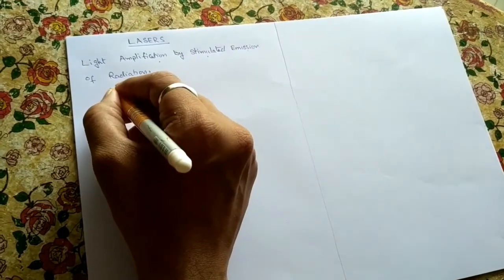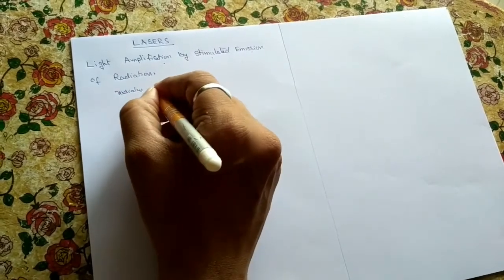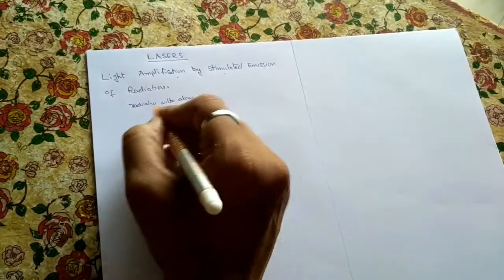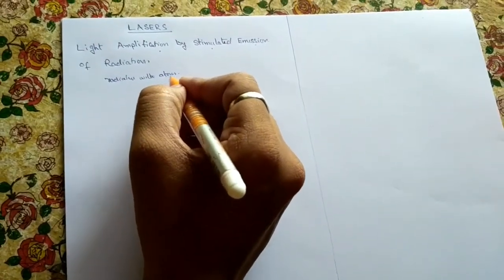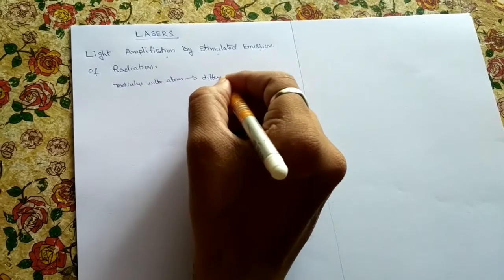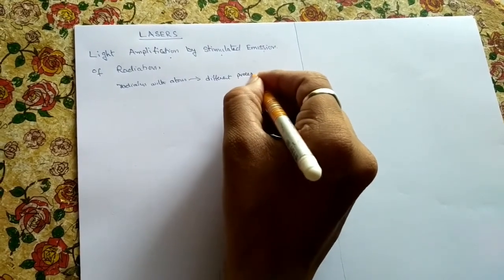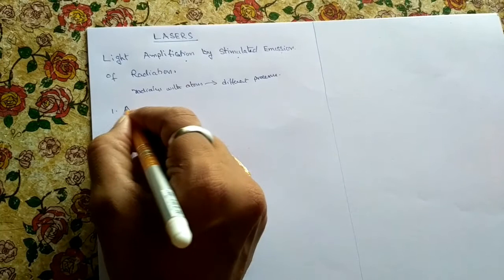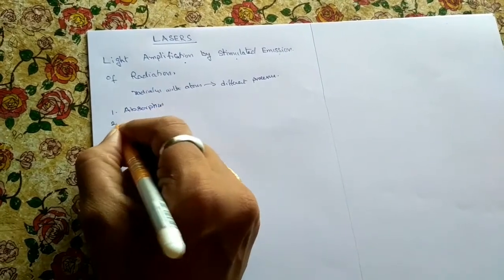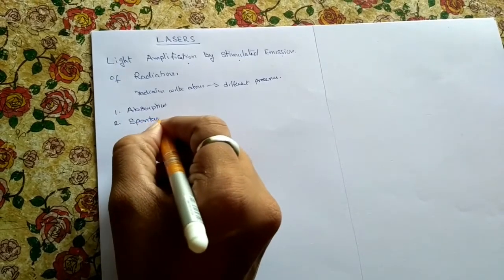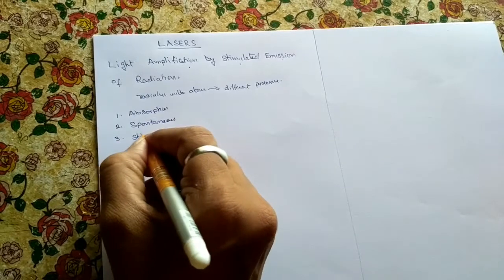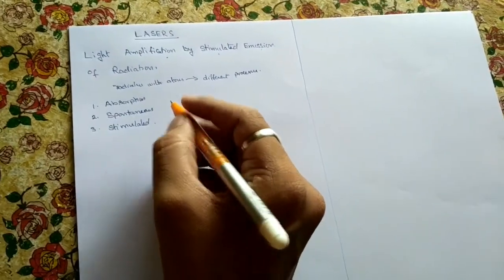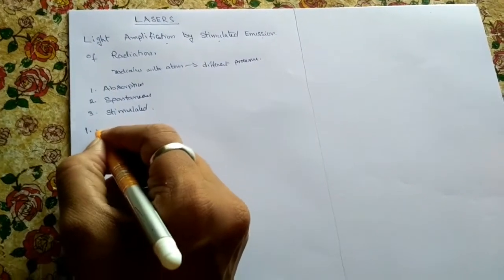The interaction between radiation and atoms gives rise to different processes. The first process is absorption, the second is spontaneous emission, and the third is stimulated emission. Let us discuss each of these three types.